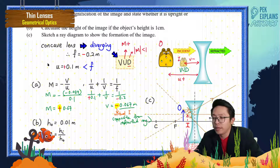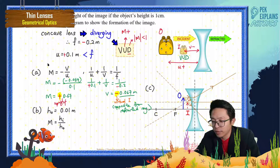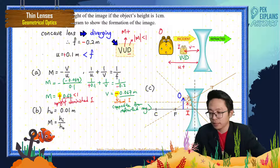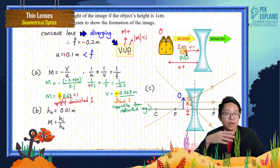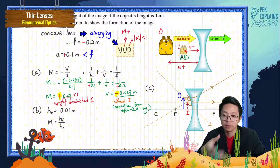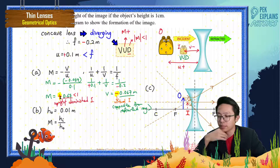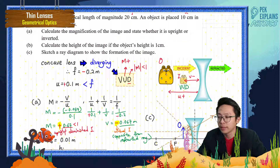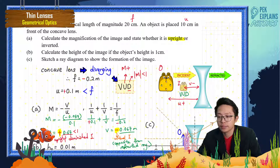So we get a smaller upright image. It is a virtual image. Less than one confirms it is correct. So the answer to whether the image is upright or inverted: it is upright, because m is positive.